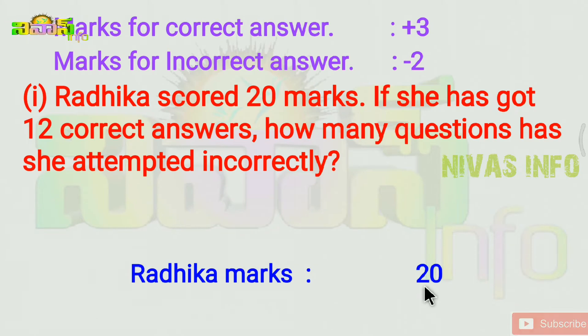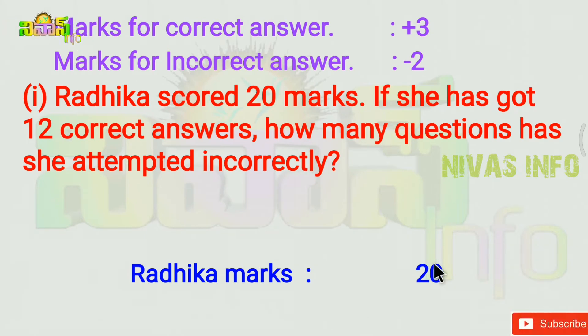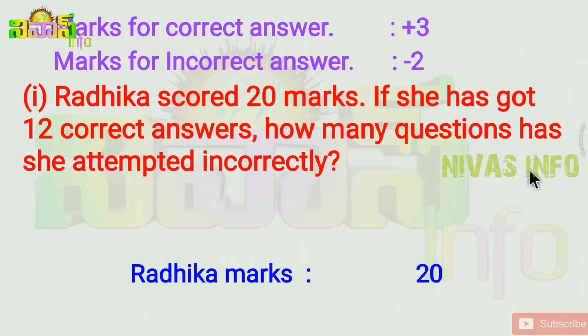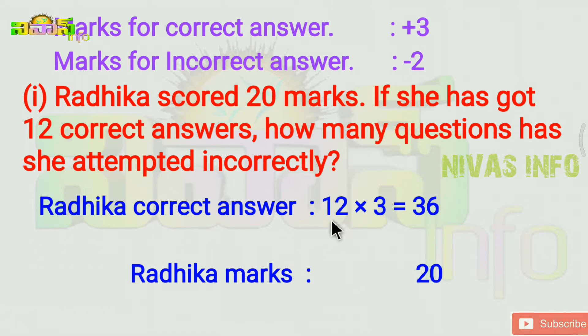Radhika scored 20 marks. The number of correct answers is 12, so marks from correct answers: 12 times 3 equals 36.